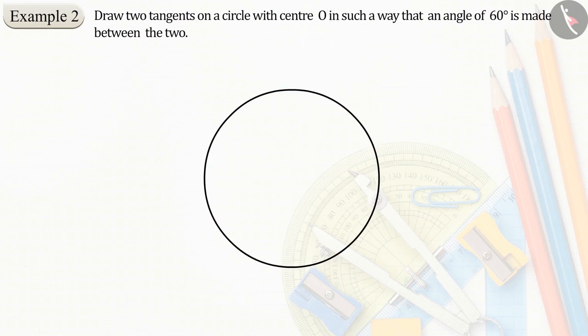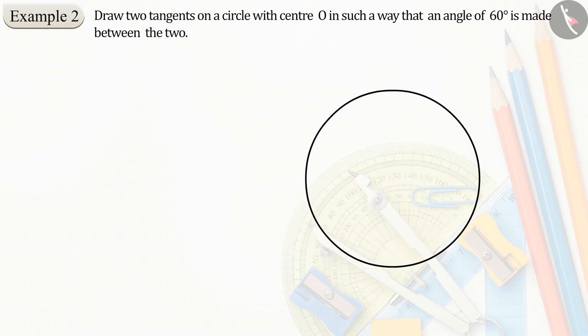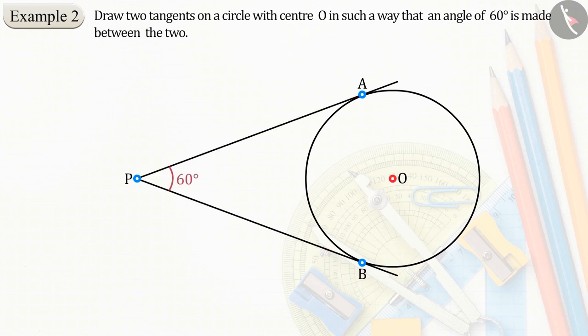In which a circle, whose center is O, which has two tangents, let them be PA and PB, between whom an angle of 60 degrees is formed. Now we can take these points A and B and connect them to center O, which gives us the quadrilateral PAOB,